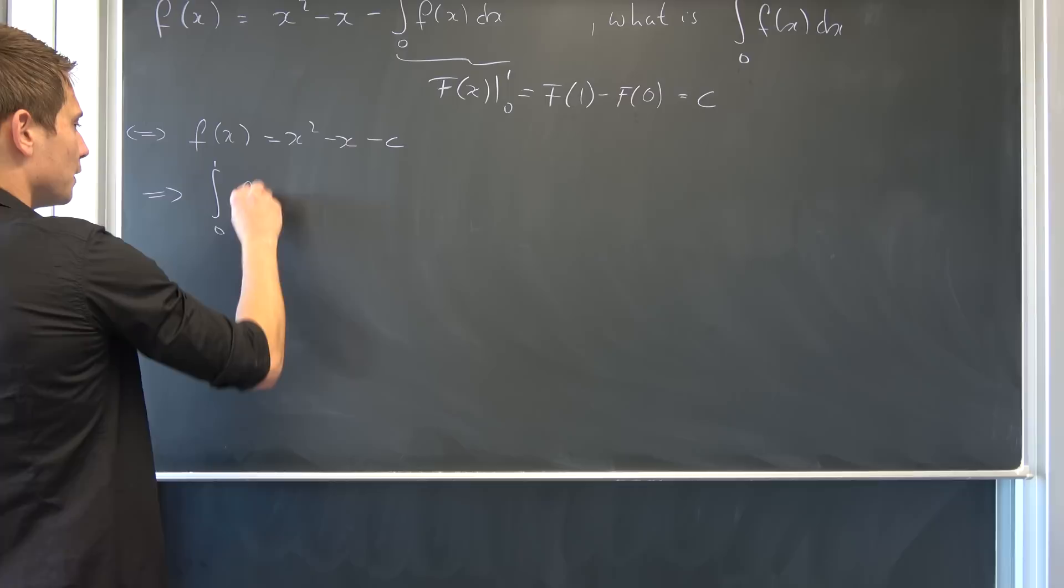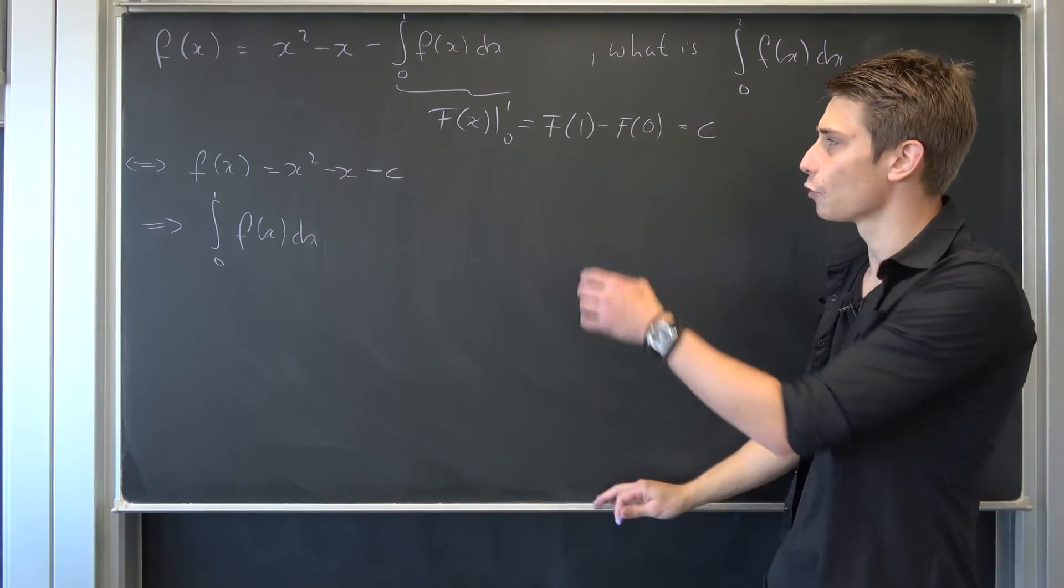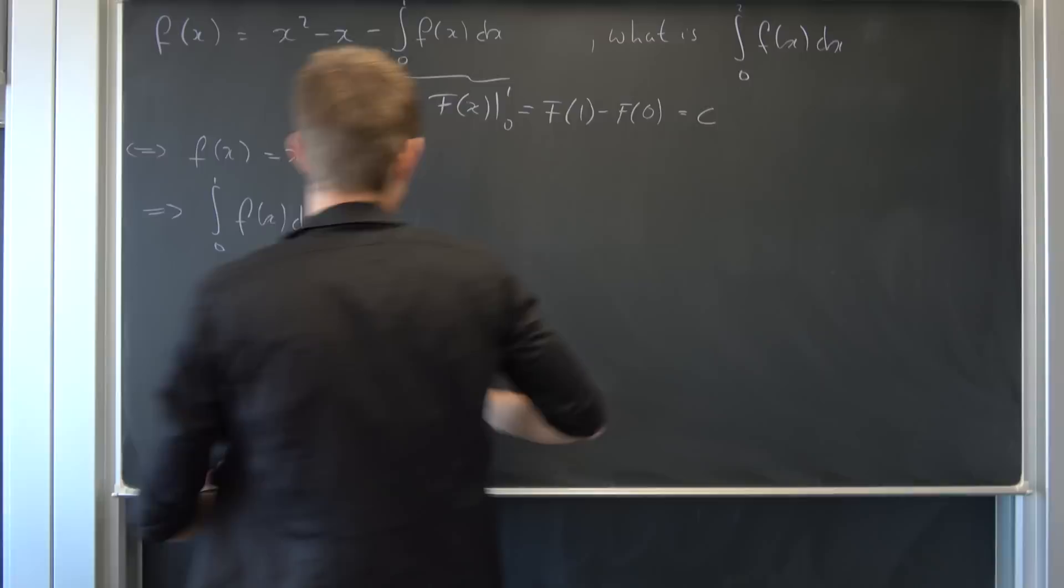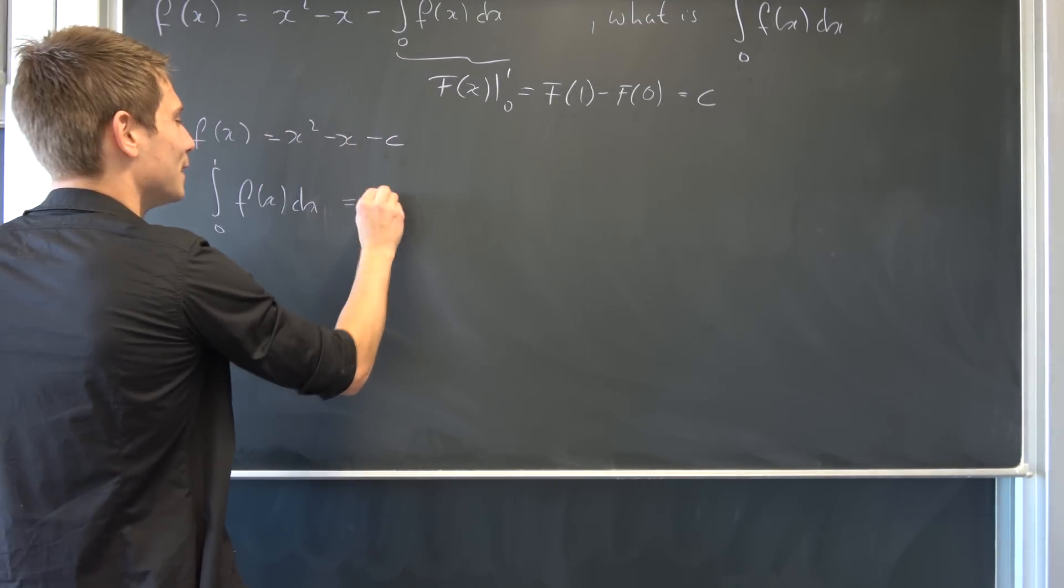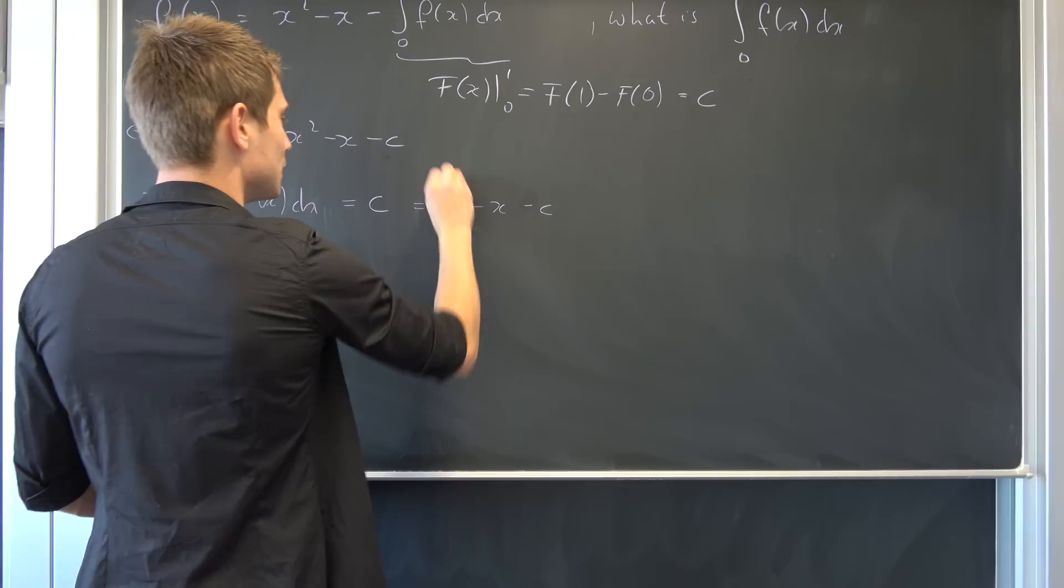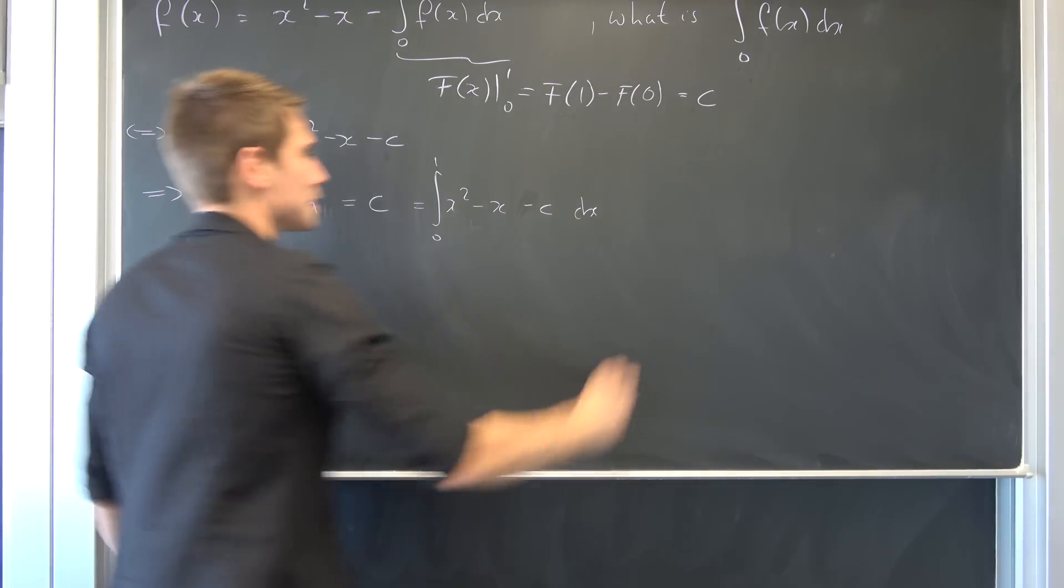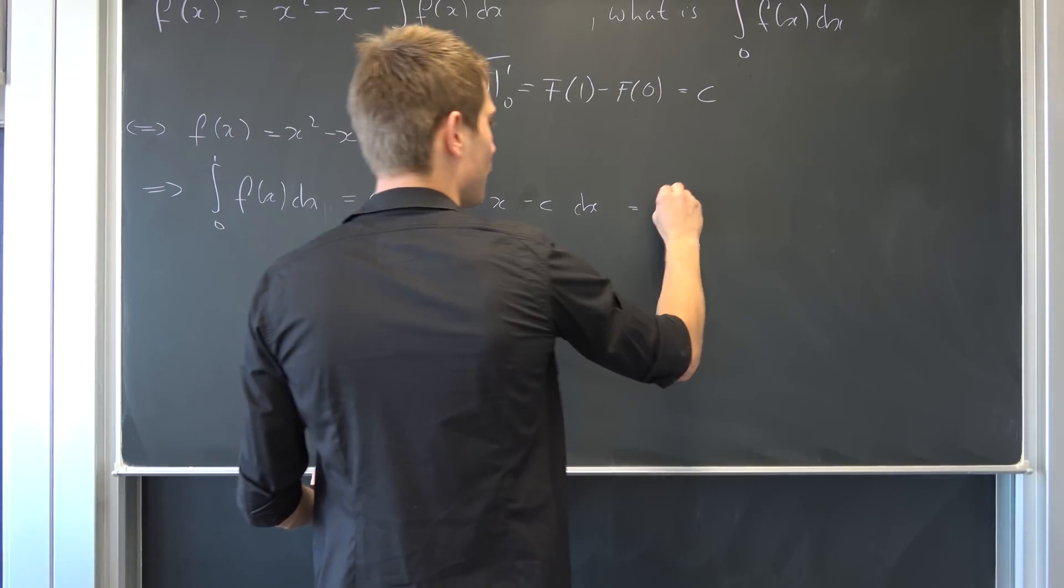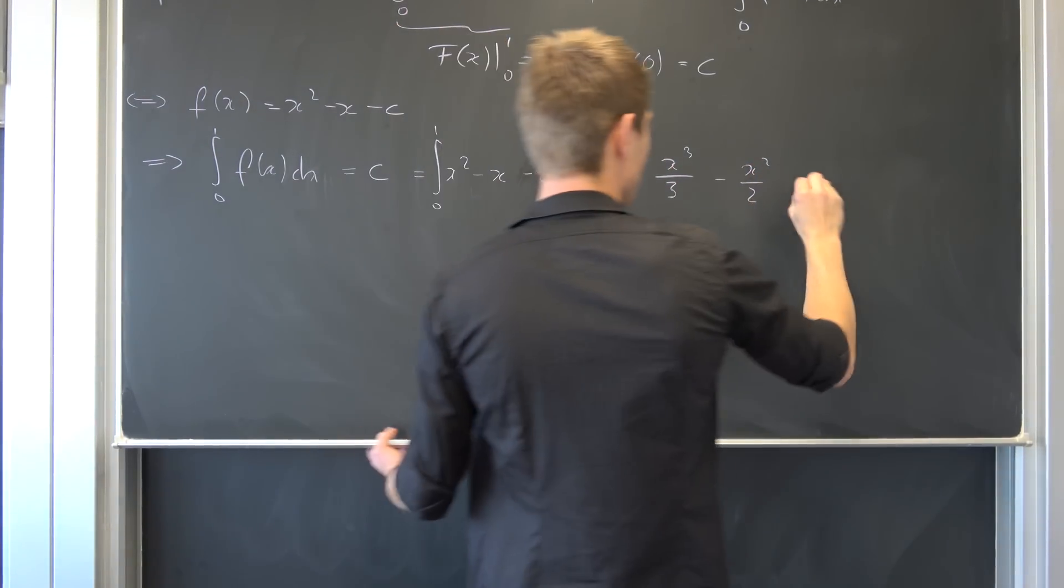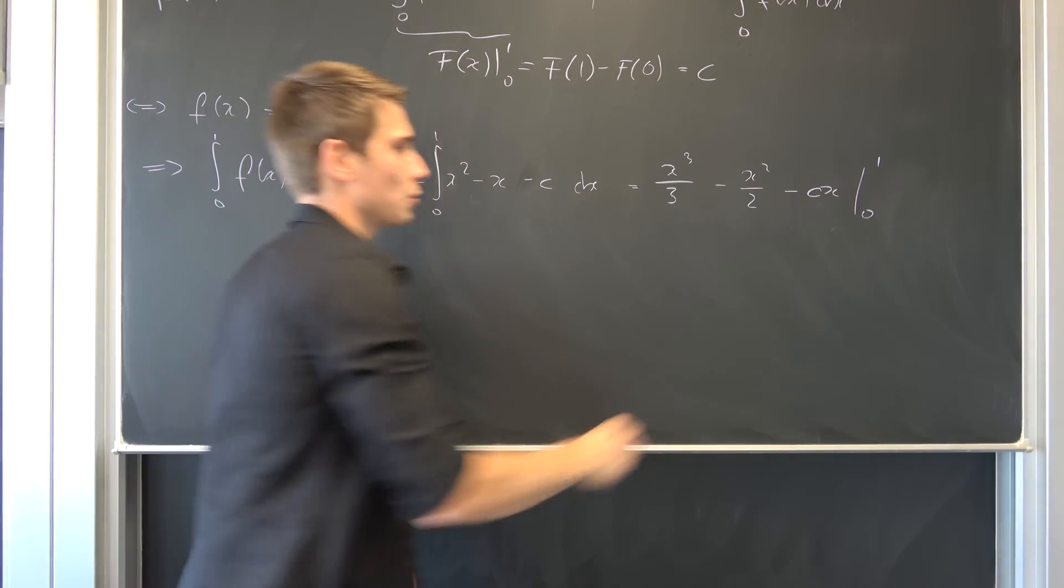So that's something we can do: integral from zero to one. The cool thing is by our definition we had before, this integral right there is just going to be some constant c, actually the same constant as this right here. So we have c being equal to x squared minus x minus c integrated from zero to one with respect to x. And integrating this is really quite easy.